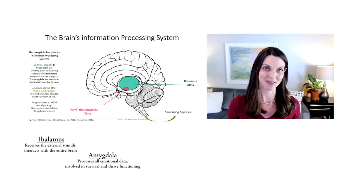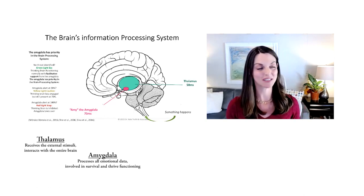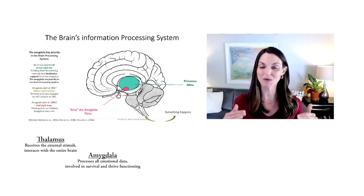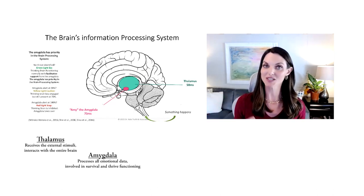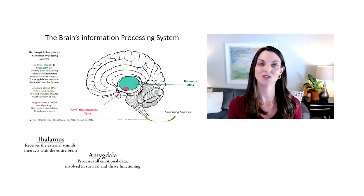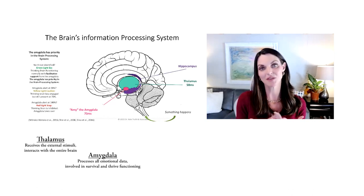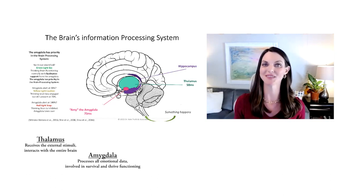So if our little friend Amy the amygdala jumps on board and says 'Oh, that's something that we really like,' then she's still going to participate in helping us make sense of the world, but she's not going to start mobilizing us into survival states. Instead, she'll go ahead and link up with our little friend the hippocampus as well as other brain parts and say, 'What do we know about this thing that happened?'